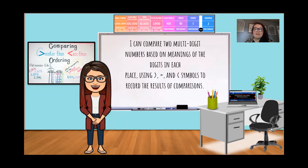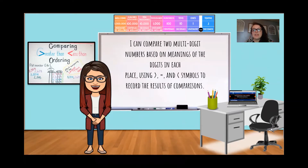Our learning goal and I Can statement for this lesson is: I can compare two multi-digit numbers based on meanings of the digits in each place, using greater than, equal to, and less than symbols to record the results of comparisons.